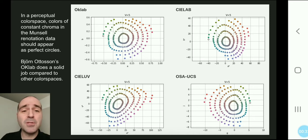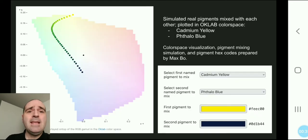If you take those predictions and put them into a perceptually uniform color space, like OKLab, you can get models like this, where it shows basically the path that you travel as you add more and more cadmium yellow to phthalo blue.